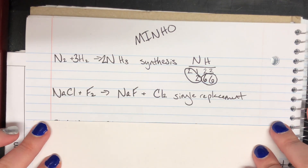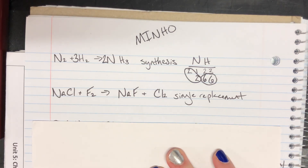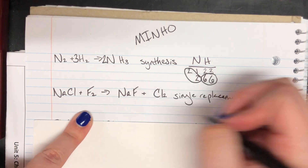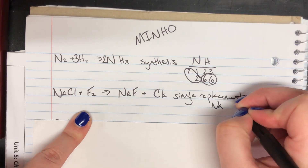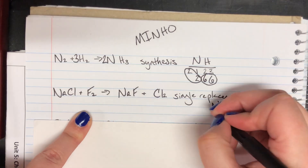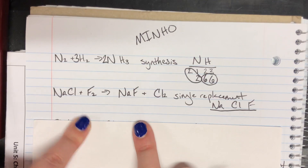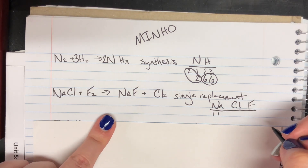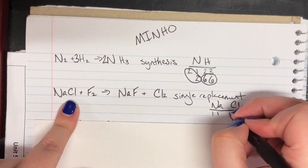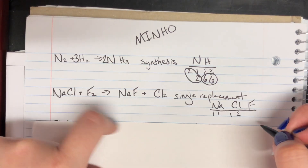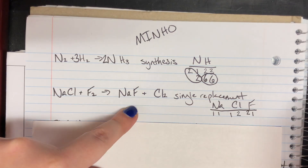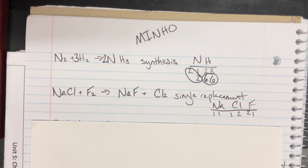My next example is sodium chloride plus diatomic fluorine going to sodium fluoride plus diatomic chlorine. I have three elements, so I'll write out all participants: sodium, chlorine, and fluorine. For sodium, I have one on the left and one on the right — we're good. For chlorine, I have one on the left but two on the right — our first problem child. And for fluorine, I have two on the left and only one on the right. So both fluorine and chlorine are my problem children that I need to fix.